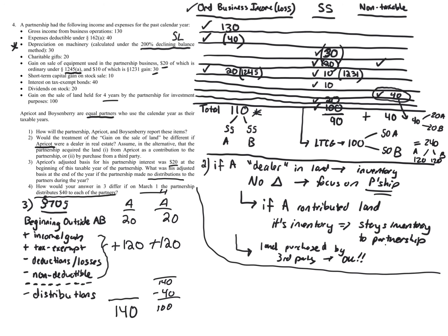The $100 becomes A's outside basis going forward, and the $40 distribution is not taxable. Those are the consequences with respect to the partner, the partnership, and all four questions in this problem.